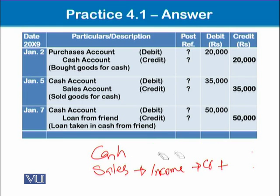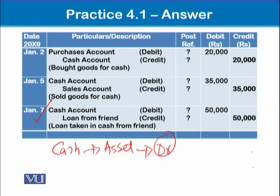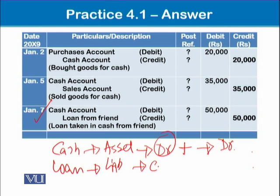In the third transaction, which happened on 7th January, we received cash as a loan from a friend. Here there are two accounting heads: cash belongs to the asset main head which is of debit nature, and since we are receiving cash our assets are increasing — when a debit nature increases we have to debit. Loan is a subhead of liability which belongs to the credit group, and our liability is increasing because of this transaction, so it would be credited. Always remember that for each transaction there will be one debit and one credit.